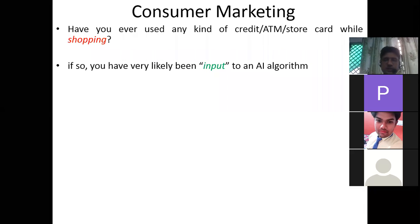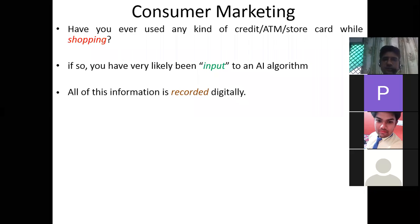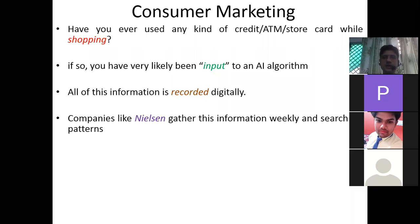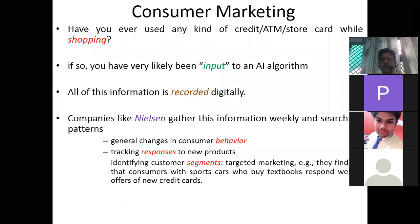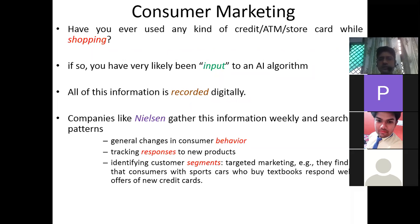What sort of goods you have purchased, on which month you have the most tendency to purchase something, and what is the range of your purchase — everything is recorded digitally. Companies like Nielsen gather this information weekly and search for patterns such as general changes in consumer behavior, tracking responses to new products, identifying customer segments, and targeted marketing.